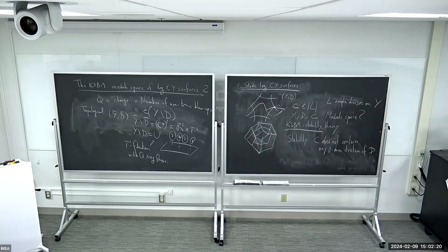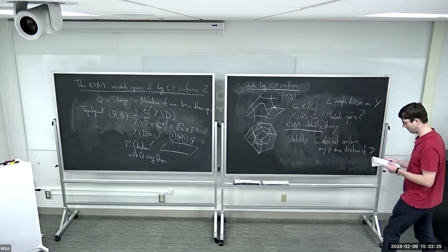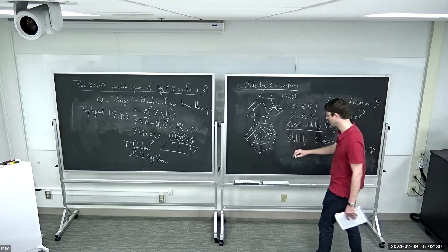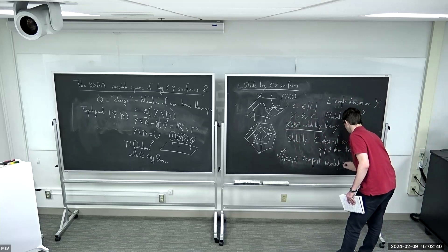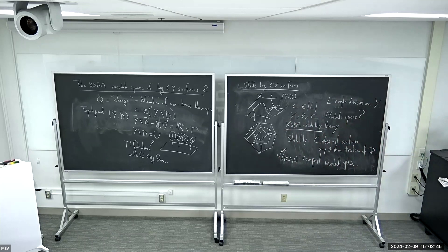In the same way that for a curve, if you have a point going to a node, there's a new component. The general theory guarantees that there is a nice compact moduli space. And again, this is the kind of nice compact moduli space, and the main result I stated at the beginning is the claim about this compact moduli space — that up to a finite cover, it is toric.